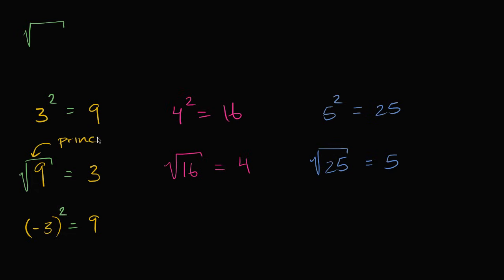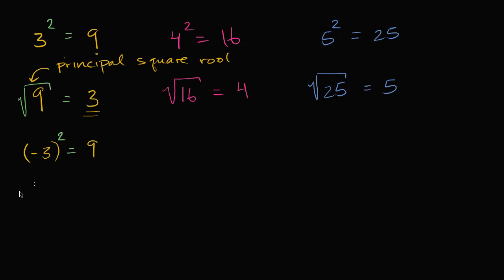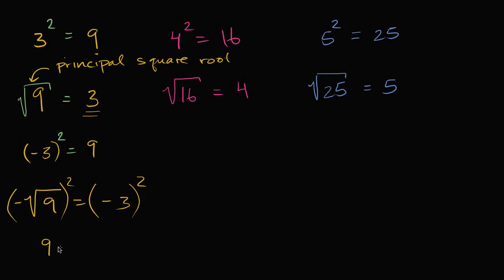The principal square root is the positive square root. If someone wants the negative square root of nine, they might write negative square root of nine, and that's going to be equal to negative three. What's interesting is if you square both sides of that equation, anything negative squared becomes positive, and the square root of nine squared is just nine. On the right-hand side, negative three times negative three is positive nine. So it all works out: nine equals nine.